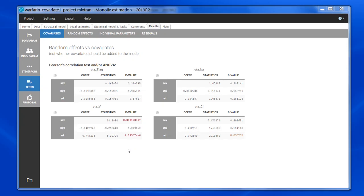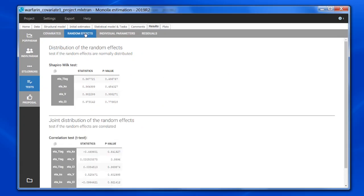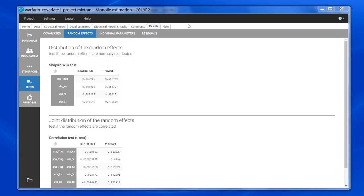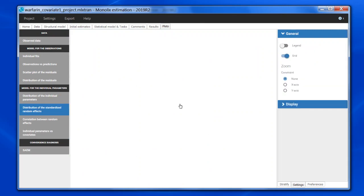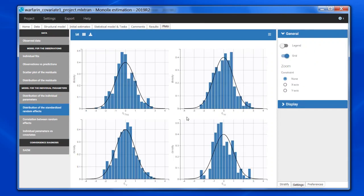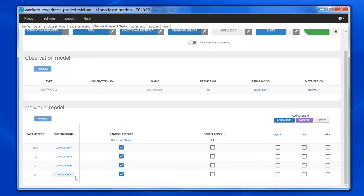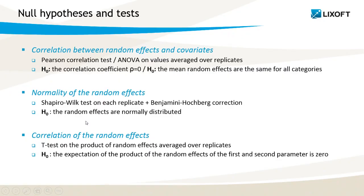So this was for the covariates. We also have the same type of tests for the random effects. First, we test that the random effects are normally distributed. This is complementary to the plot distribution of the random effects. It can help to detect that the parameter distribution we have assumed here is not well suited. More specifically, the null hypothesis is that the random effects are normally distributed. The test is a Shapiro-Wilk test.